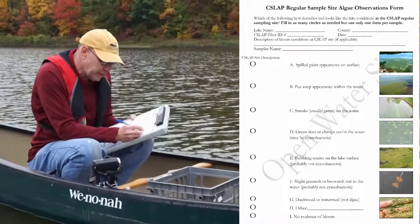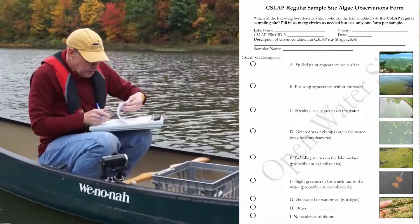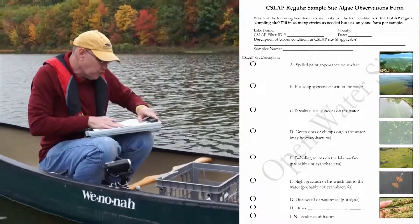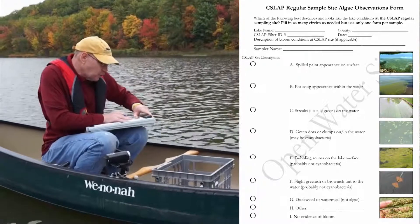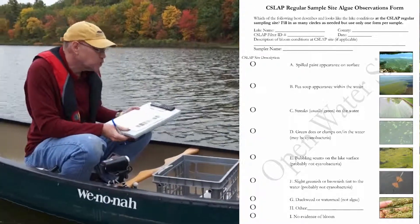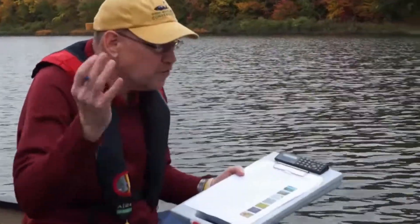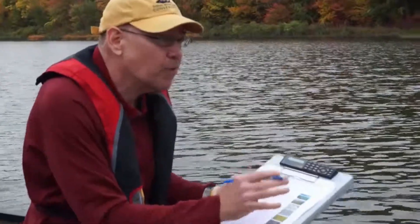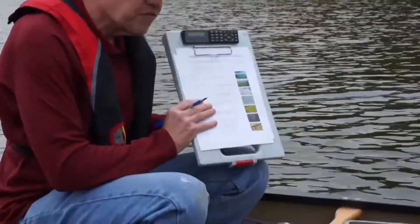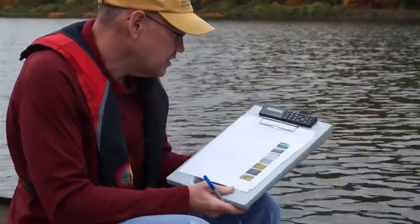The last form you need to fill out is fairly new to the program and relates to an increasing concern about algae blooms. We want you to record the conditions right here on the lake and whether there's a bloom going on. There's a separate form for the shoreline with a map to document where you're seeing shoreline blooms. This form is for the center of the lake where you're collecting the sample.